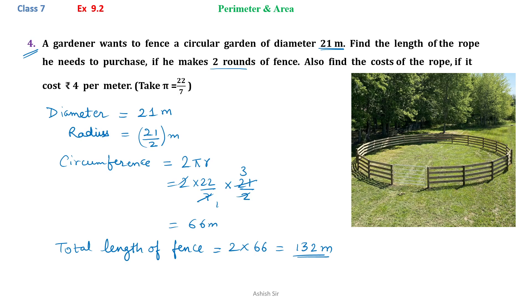Now we know that cost for 1 meter of rope is Rs. 4. Therefore, we can find cost of 132 meters will be 4 × 132. So that will be 528. So Rs. 528 is the cost of the rope needed.